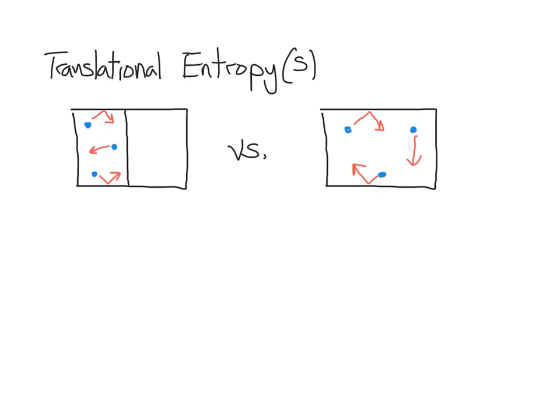Let's look at translational entropy. Translational energy is the energy due to the motion of molecules and atoms in three-dimensional space, meaning the molecules are actually translating or moving in X, Y, and Z. Here are two different scenarios — a container with three gas molecules in it. The gas molecules are the little blue dots, and the red arrows represent their vectors or their motion, so they're translating in three-dimensional space. Which scenario, either the left side or the right side, has a higher entropy?